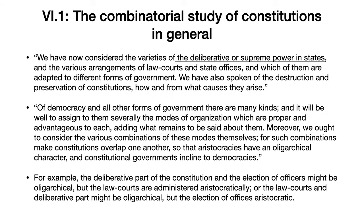Aristotle shows ways that democracies can have aristocratic aspects or even elements of their constitution. Similarly, oligarchies can have democratic aspects. So, for example, the deliberative part and the election of officers might be oligarchical, but the law courts might be administered aristocratically. This is the idea of a combinatorial study: we look at the configurations of each element and what modes they are on, how many different ways those can be combined, and then we classify all of those to get a classification of all possible forms of constitution.